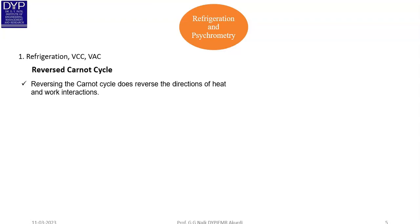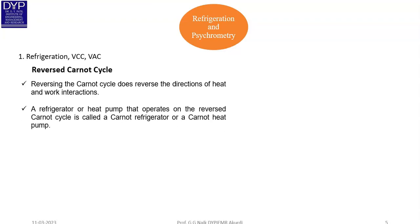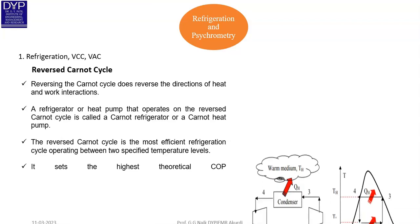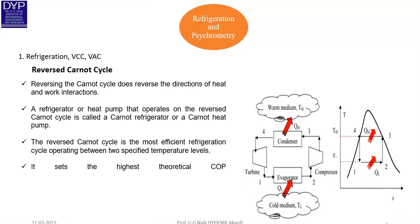By reversing the direction of the Carnot cycle, we obtain the Reverse Carnot Cycle. A refrigerator or heat pump that operates on the Reverse Carnot Cycle is the most efficient refrigeration cycle operating between two specified temperature levels, and it sets the highest theoretical COP.